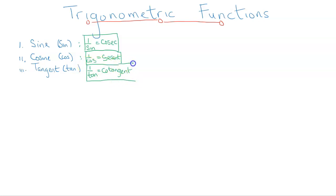So these are the six ratios. The basic ones: sine, cosine, and tangent. And their reciprocals: cosec, secant, and cot. But why do we need to pay attention to trig functions? We have to pay attention to them because the trig functions relate an angle in a right triangle to the ratio of two side lengths.